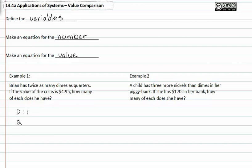We also know that d is representing the number of dimes, not the value. And q is representing the number of quarters, not the value for the quarters. We know that he has twice as many dimes as quarters.